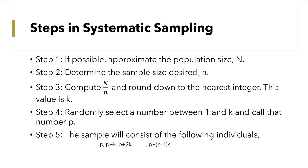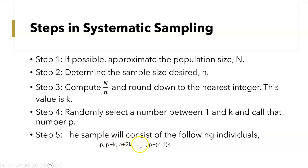There are some steps in systematic sampling if you know the population size. You take the population size, determine what sample size you want, then divide the population by the sample size — that gives you your K, where you take every Kth individual. Then you randomly select a number between 1 and K, call it P, start with P, and add K each time. The last number selected is determined by the formula: P plus (n minus 1) times K, where n is your sample size.